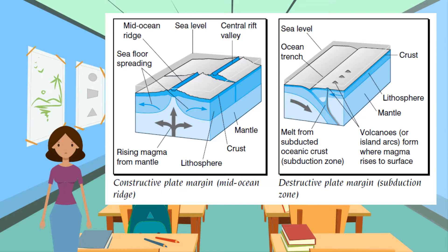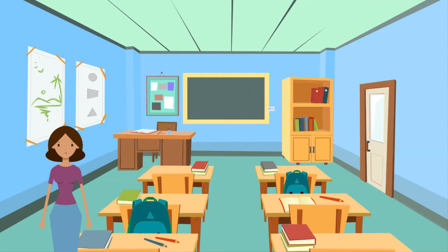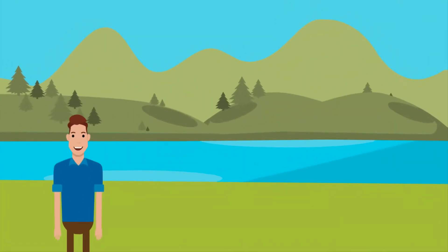At destructive margins, one plate is forced under another into the subduction zone. Seismic waves as a result of plate movement cause earthquakes. The focus of an earthquake is a fault deep in the Earth's crust. The shock waves move out from the focus and reach the Earth's surface at the epicenter. Most earthquakes occur along plate margins.